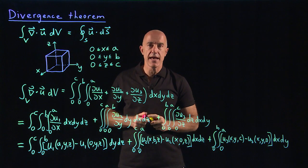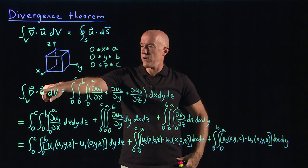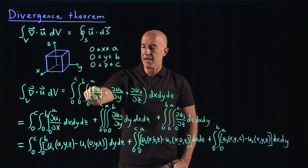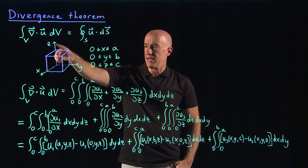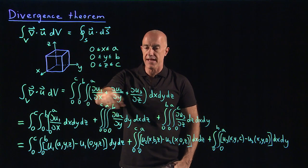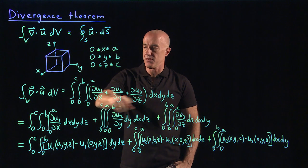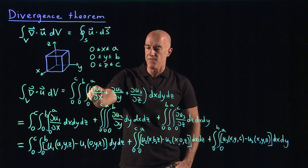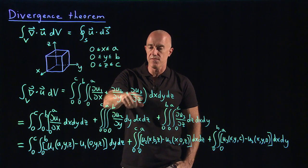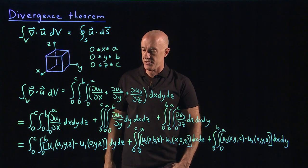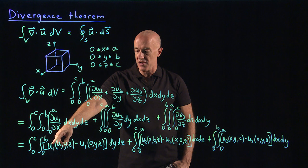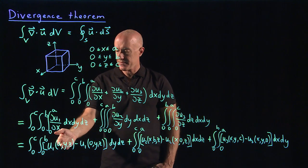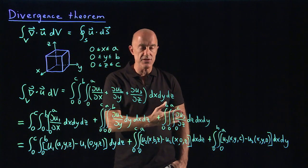This looks complicated, but it is not. We're integrating del·u dV over the volume of this cube. Del·u is just the sum of the partial derivatives, and this is a simple rectangular integral with x from 0 to a, y from 0 to b, z from 0 to c. Each derivative we integrate once, switching the order of integration, then apply the fundamental theorem of calculus. Each of these terms is now a surface integral.